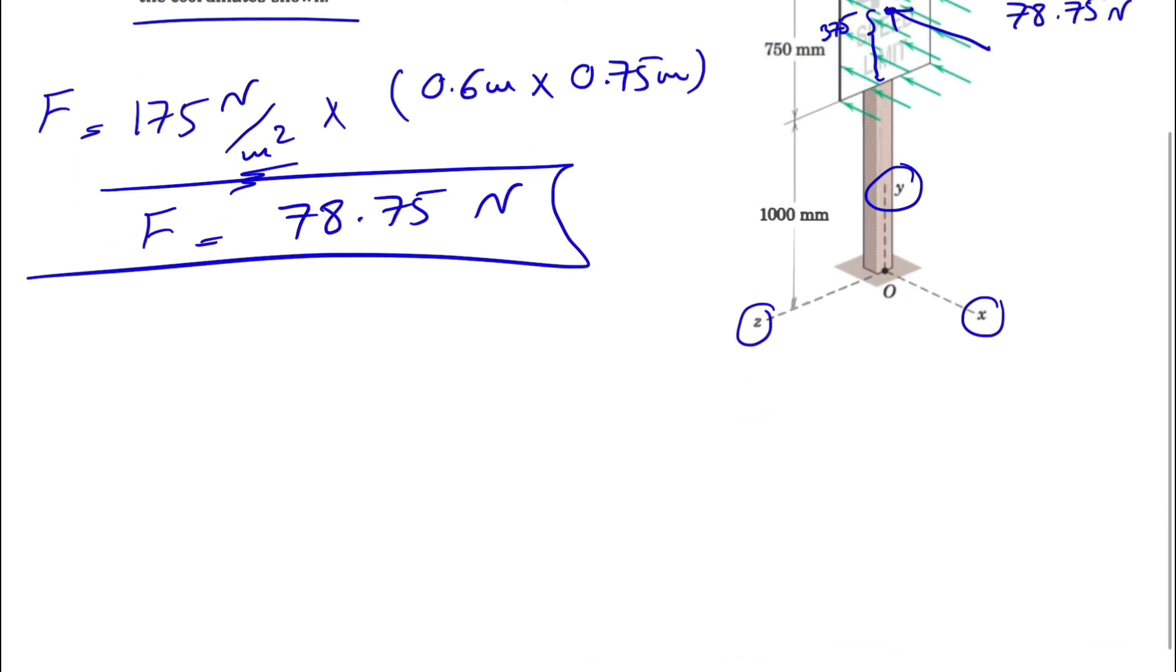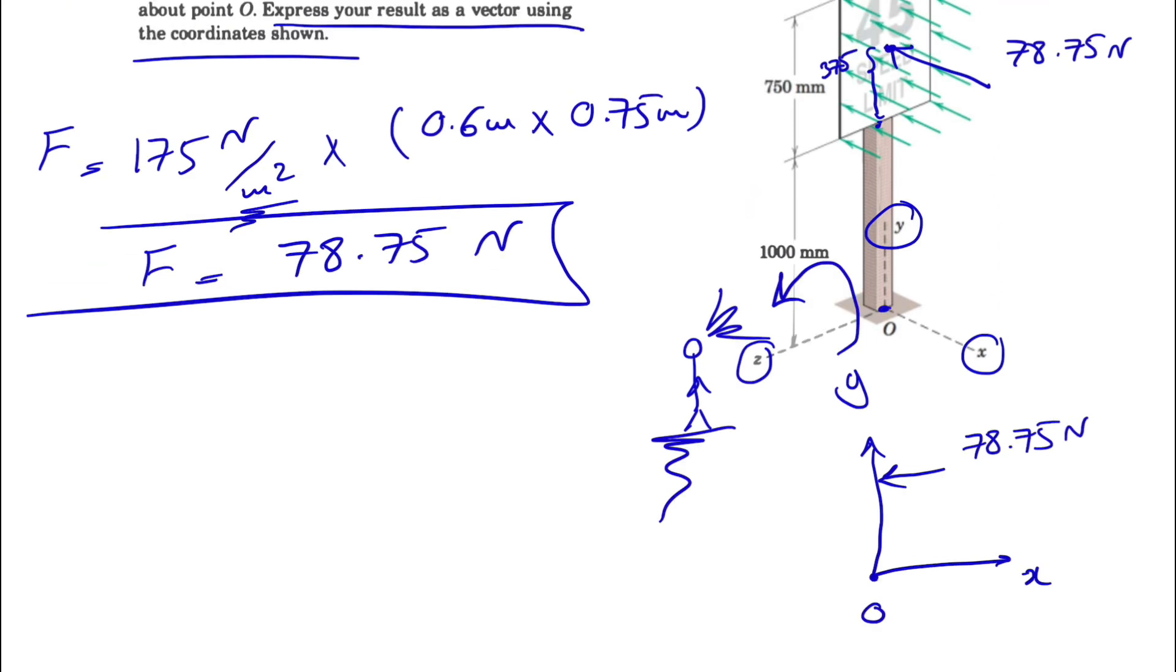Now the question can be a 2D question. If we are standing here and looking at it, we're going to see the x and y plane, and we have this force that is applying in this direction, 78.75 Newtons. The distance that we have is basically 1000 plus 375, or 1375 millimeters, which is 1.375 meters.